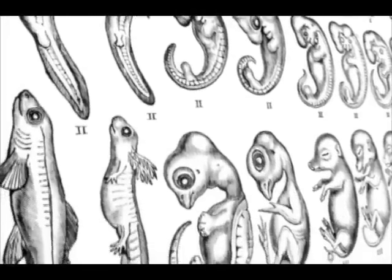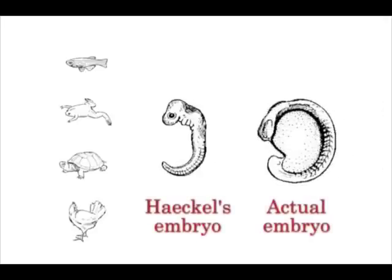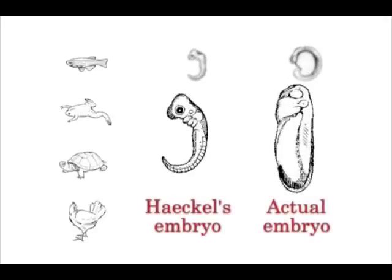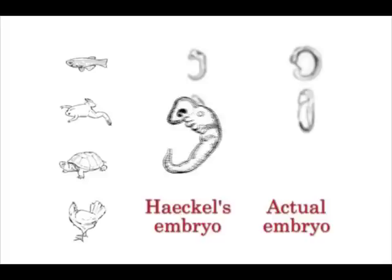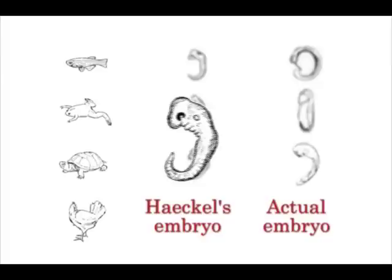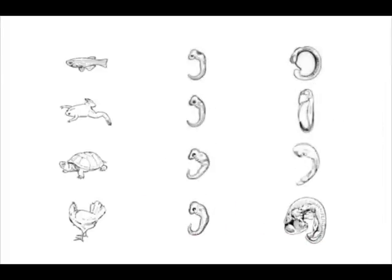The problem is that he faked his drawings. The early vertebrate embryos don't really look that similar at all. The problem with Haeckel's drawings wasn't just that they were inaccurate — they were actually false in many cases. But the real damage was done when these drawings entered biology textbooks decades ago, and they've never really been taken out.